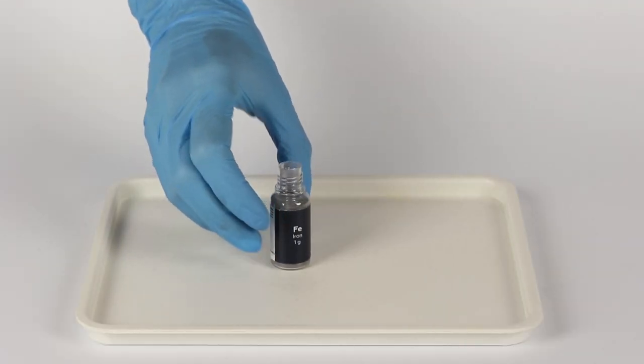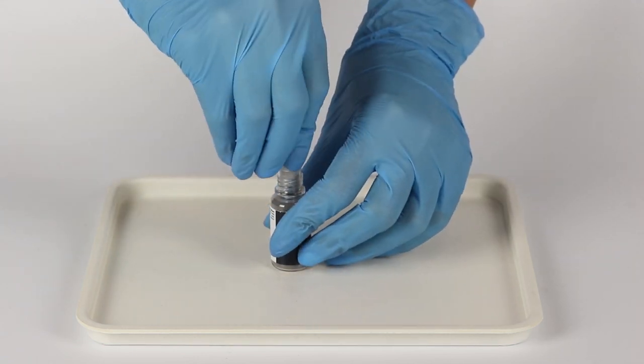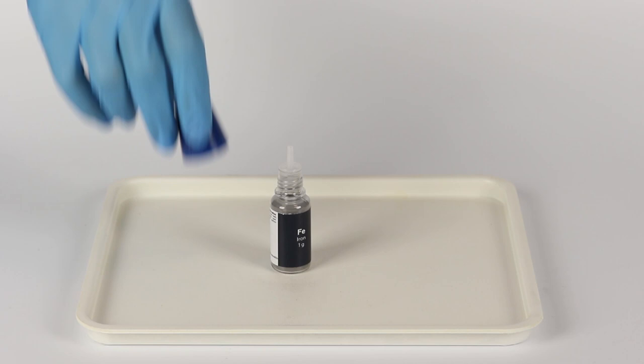Prepare the iron powder and the candle. Take the bottle with the iron powder and remove its cap. Insert the tip into the bottle, securing it tightly.